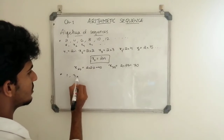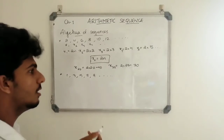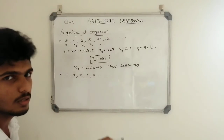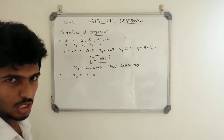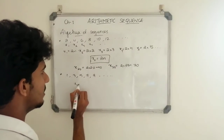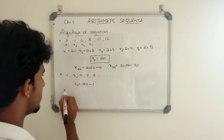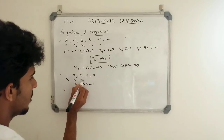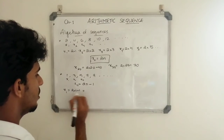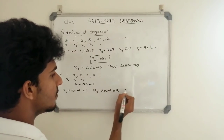We have another number sequence: 1, 3, 5, 7, 9 — the odd numbers. If we have an expression for 2n, we have xn = 2n - 1 for odd numbers. With n as the term number, x1 equals 1, x2 equals 3, x3 equals 5 and so on.